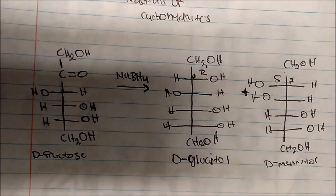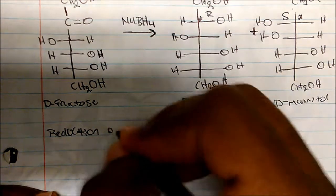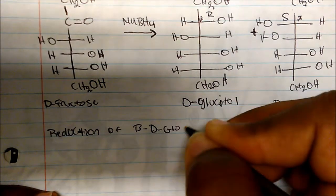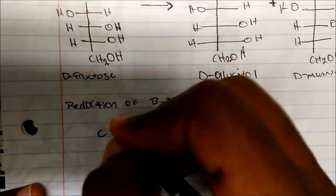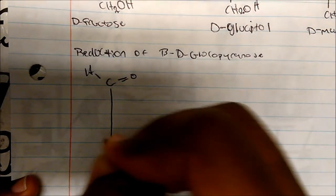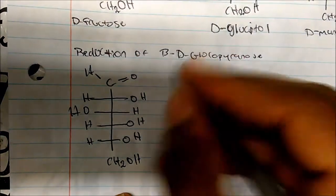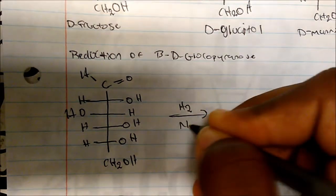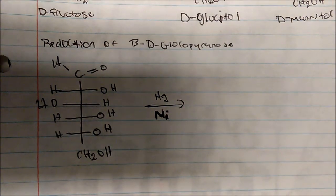Now let's talk about reduction. This is actually a reduction, and let's use in this case beta-D-Glucopyranose. The open-chain aldehyde looks something like this — there's my CH2OH. The open-chain Fischer projection looks something like this. Now what if we took this molecule and added hydrogen gas with some sort of catalyst — in this case, we could use nickel? I'll actually reduce the carbonyl to an alcohol.